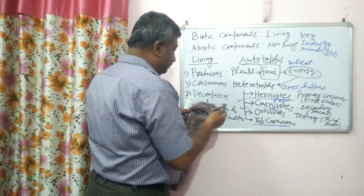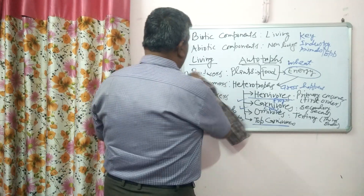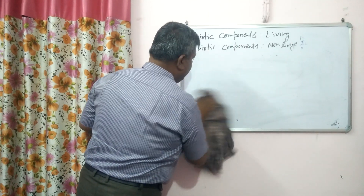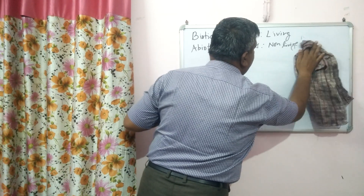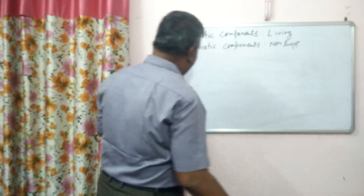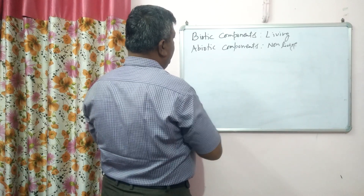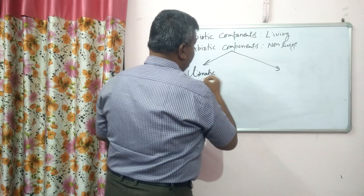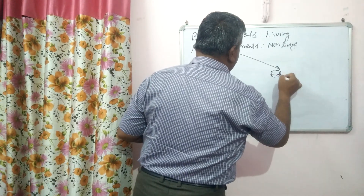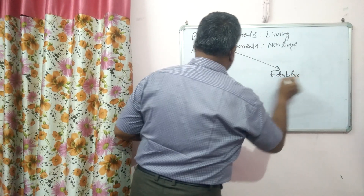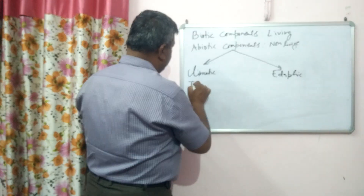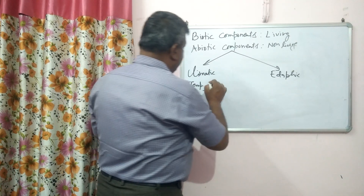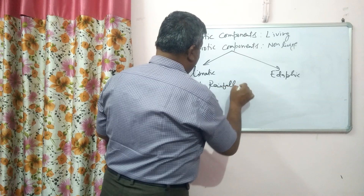The second component is the non-living component, that is the abiotic component. There is no respiration in non-living things. This abiotic component can be categorized into two parts: climatic component, which are related to climate, and edaphic component. In case of climatic components, temperature is very important for the growth of plants, as well as rainfall, precipitation, and moisture.